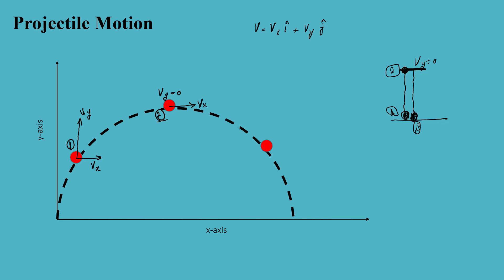What about position three? My vx is still going to be positive because the particle is still moving in the positive x direction. However, my vy is going to be negative at this point, because the particle is going down — so the velocity is also going down, and its direction is in the negative y axis.